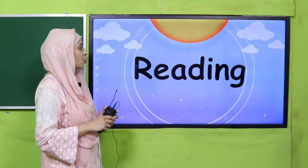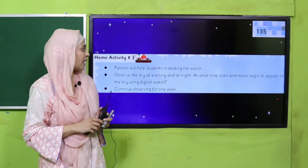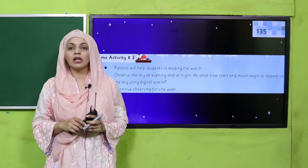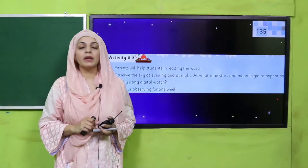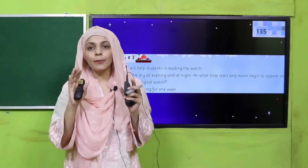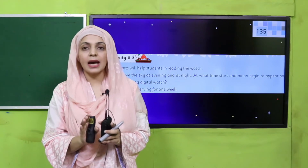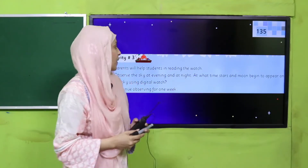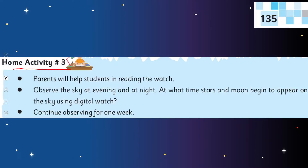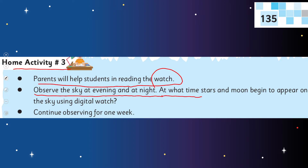Humari ek activity hai — let's quickly move towards Home Activity Number 3 given on page number 135. I hope everybody has opened it. Mein aapko bataungi ke aapne ghar mein is activity ko kis tarike se perform karna hai. Parents will help students in reading the watch — observe the sky at evening and at night to see at what time stars and moon begin to appear, using a digital watch. Continue observing for one week.